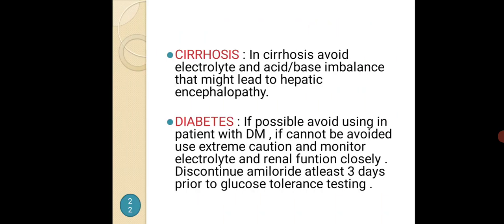Cirrhosis: in cirrhosis, avoid electrolyte and acid-base imbalance that might lead to hepatic encephalopathy. Diabetes: if possible, avoid using in patients with diabetes mellitus. If unavoidable, use with extreme caution and monitor electrolyte and renal function closely. Discontinue amiloride at least 3 days prior to glucose tolerance testing.